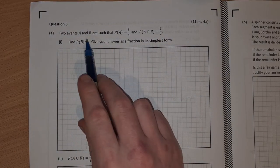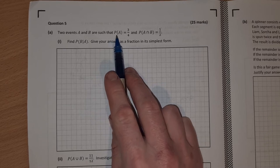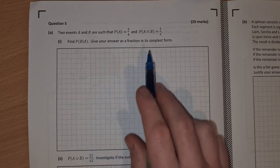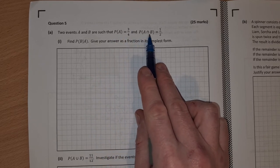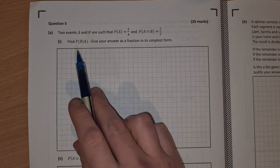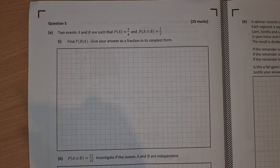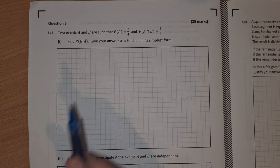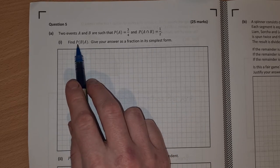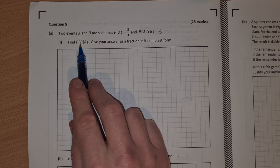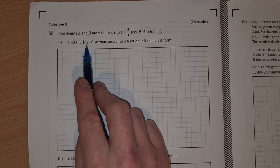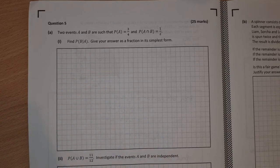Part A says two events A and B are such that the probability of A is 3 quarters and the probability of A intersection B is a half. Find the probability of B given A. Give your answer as a fraction in its simplest form. So this means what's the probability of B happening given that A has definitely happened or that A has already happened.